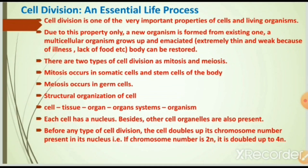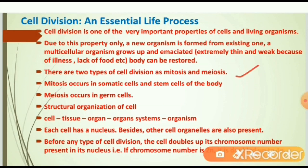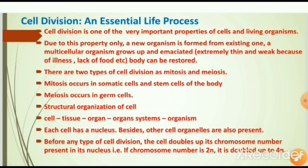Cell division is an essential life process and one of the very important properties of a cell and living organism. Due to this property, a new organism is formed from an existing one, a multicellular organism grows up, and an emaciated body can be restored. There are two types of cell division: mitosis occurs in somatic and stem cells; meiosis occurs in germ cells. Structural organization is: cell, tissue, organ, organ system, and organism. Each cell has a nucleus and other organelles. Before any cell division, the cell doubles its chromosome number — from 2n to 4n.